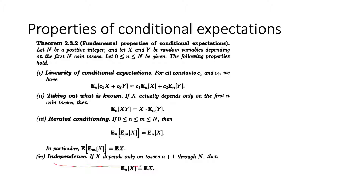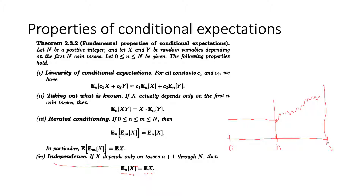The last property is independence. If X depends only on coin tosses n+1 through N, then on a timeline from 0 to n to N, before time n it was not random, and starting from time n going forward it becomes random. So the expected value as of time n of X is equal to just the expected value of X, because the randomness starts after n. Whether we're computing the expected value as of time 0 or as of time n, these two will match, because before time n there is no randomness.